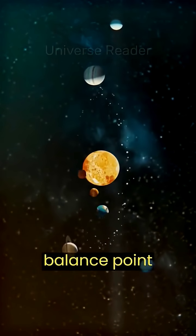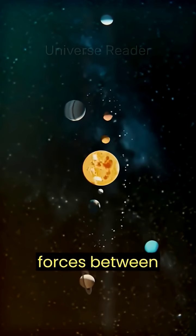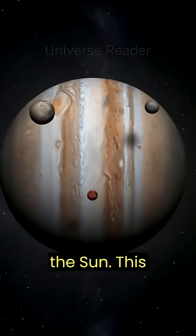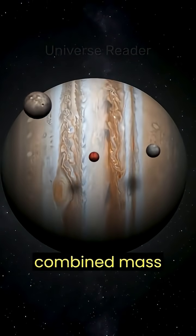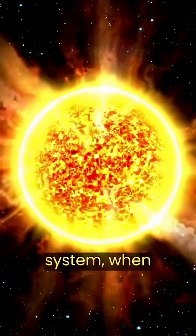The barycenter represents the balance point of gravitational forces between Jupiter and the Sun. This phenomenon is a consequence of the immense mass of Jupiter, which is greater than the combined mass of all the other planets in our solar system.